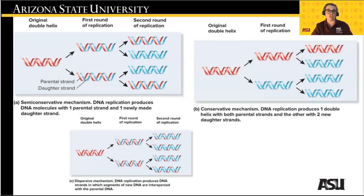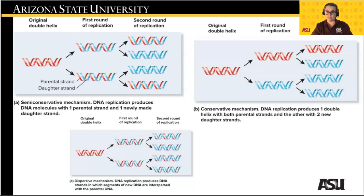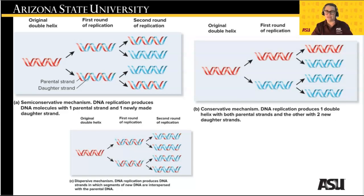Three mechanisms of DNA replication were proposed. The first, the semi-conservative model, showed that each of the two parent strands made a complementary copy of itself, creating a daughter strand. The second, the conservative model, demonstrated that both copies as a double helix made a copy of themselves, creating the daughter strands. The third was dispersive, in which the parent strands made segmented copies of their DNA and integrated it into their existing DNA, creating new daughter strands with mixed old and new pieces of DNA.